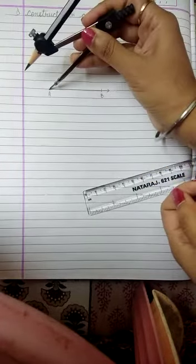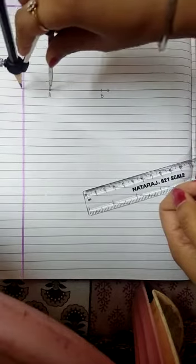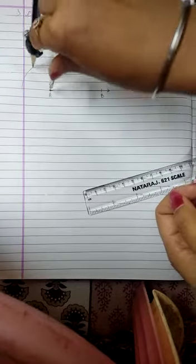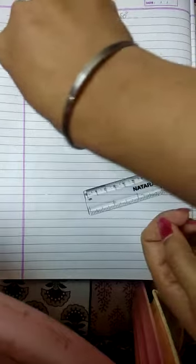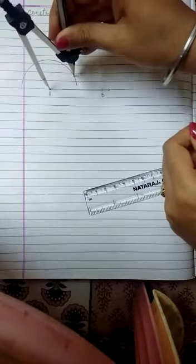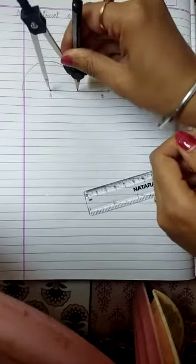So put the compass, place the compass on point A and draw a semicircle. Now that this semicircle cut on point C on ray AB.